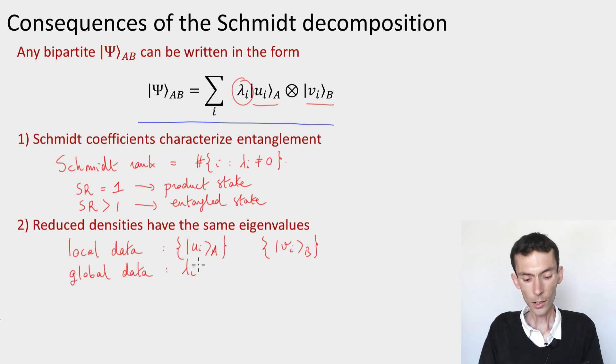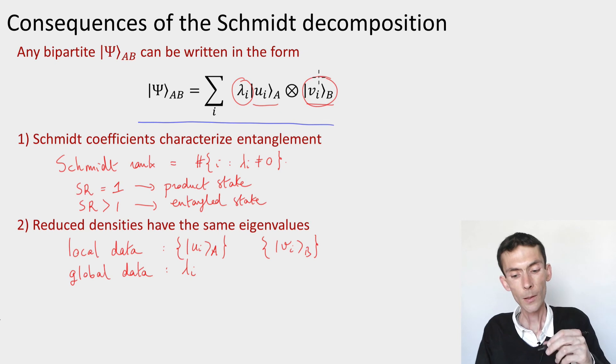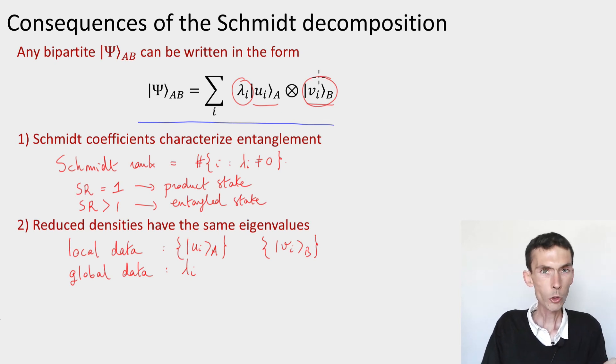Now, the last thing that I want to point out is that this decomposition makes it very easy for us to compute the reduced density of the state psi on the system A or on the system B. How would we do that? Let's do it for the system A. We have to choose the basis in which to measure B. What basis are we going to choose? Well, the vi's, right?